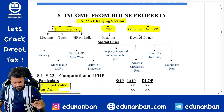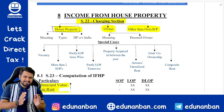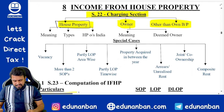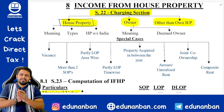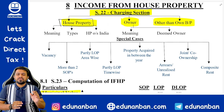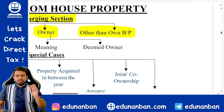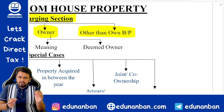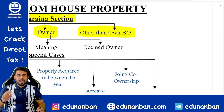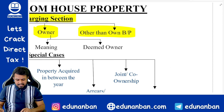Like any other head of income, for house property there is a charging section and a computation section. The charging section is Section 22, which says that for income from house property to arise: there should be a house property, the assessee should be the owner of the house property, and the property should not be used for the assessee's own business or profession. If property is used for own business, ignore it; and if the assessee's business itself is giving house property on rent, it will be covered under PGBP, not under the house property chapter.